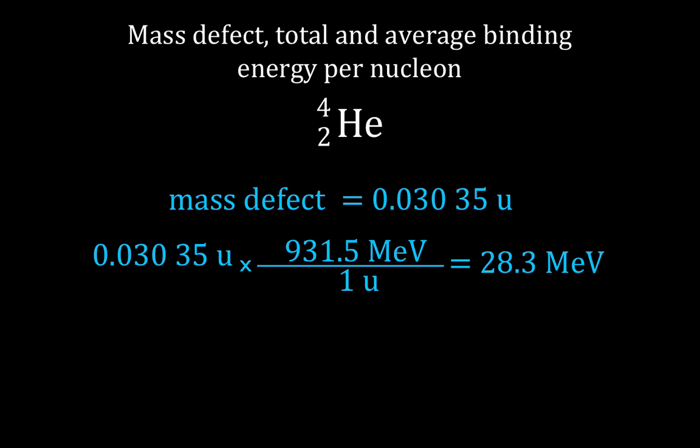I'm just going to do this for the total — of course you could divide by four and get the same answer. You see we get the same answer for the total binding energy of 28.3 mega electron volts. That's a little easier, though the other equation is sometimes more interesting because it shows you the relationship between energy and mass and Einstein's equation, E equals mc squared.